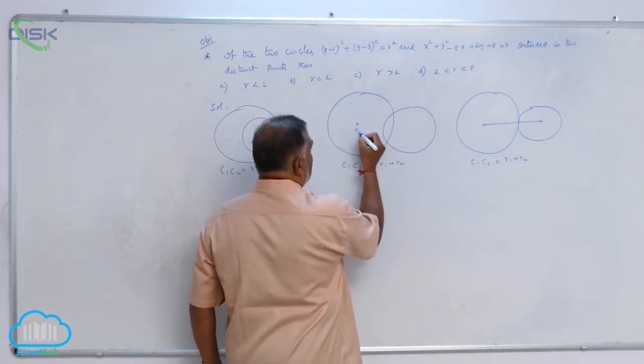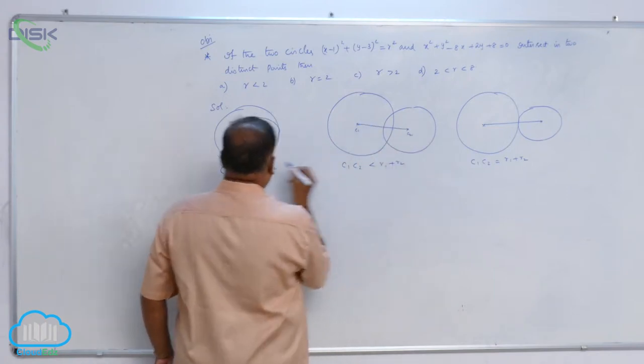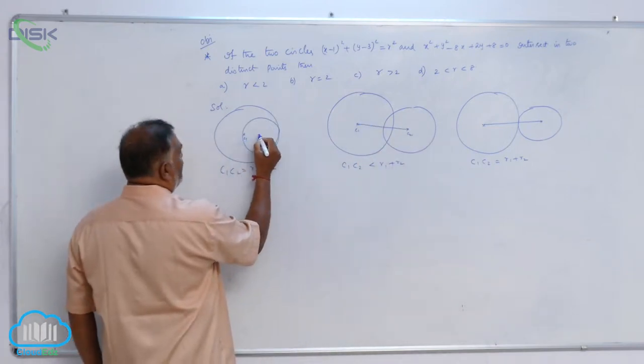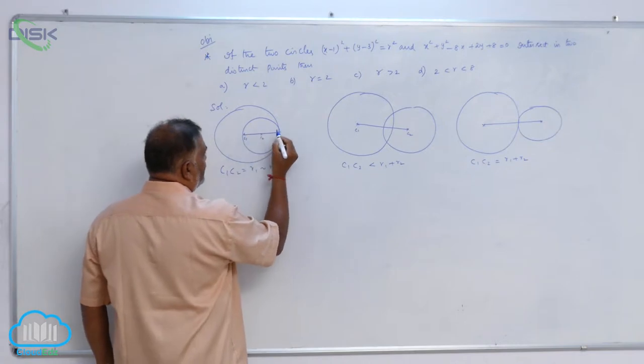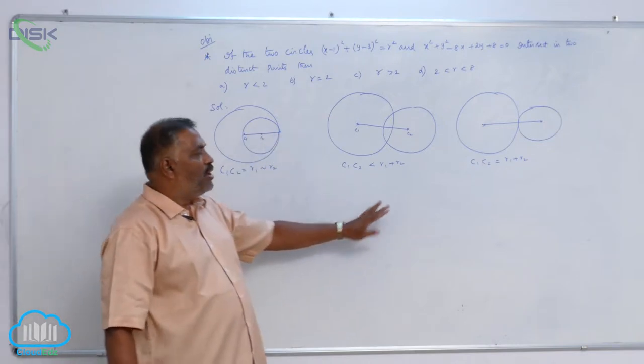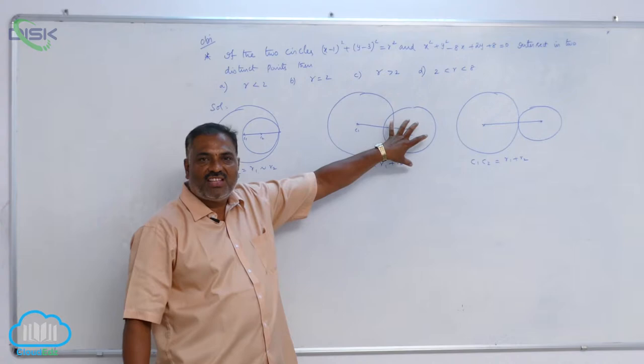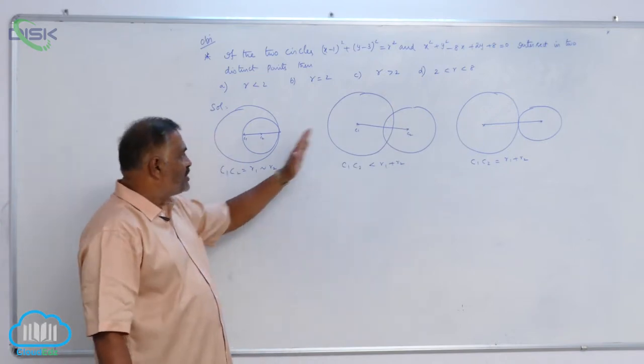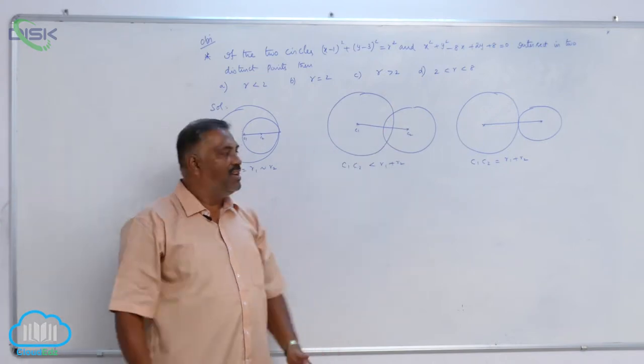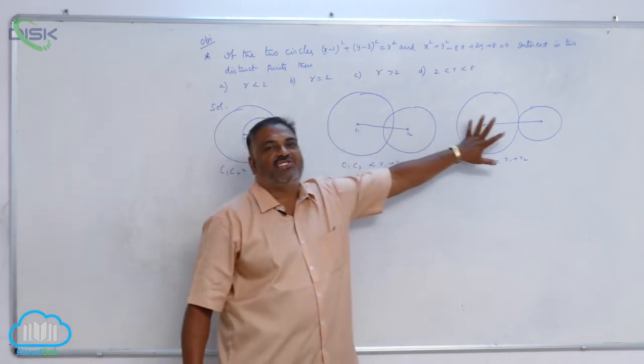Now this is C1, this is C2. Here this is C1, this is C2 like this. So two circles intersecting each other means these two circles will be lying between touch internally and touch externally.